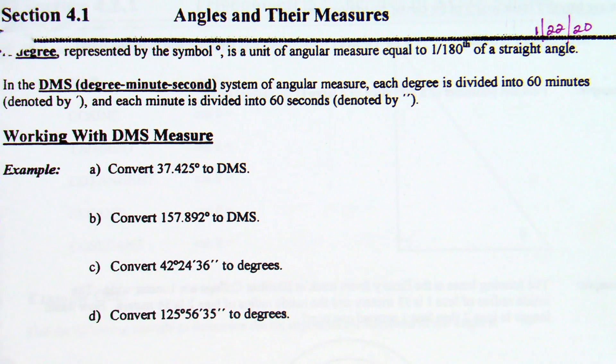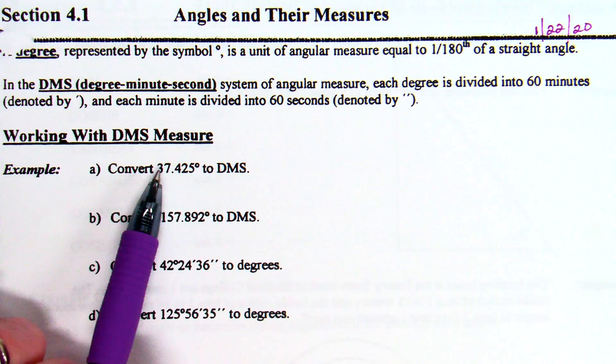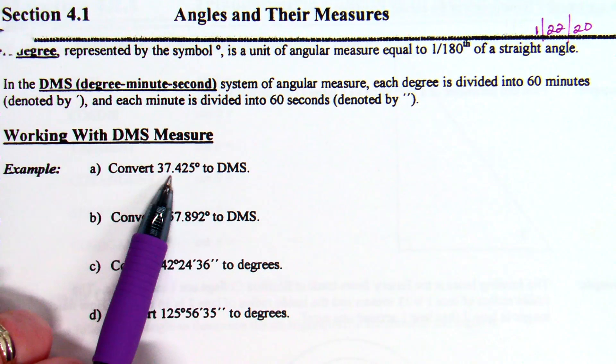First thing we do is we are talking about DMS. Degree, minute, second. In the degree-minute-second system of angular measure, each degree is divided into 60 minutes, denoted by a single apostrophe or mark. And then each minute is divided into 60 seconds, which is a double mark, kind of like a quote mark. We're going to be working here with how to go back and forth.